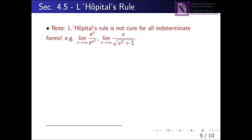بالمختصر، في بعض الأحيان لو استخدمنا L'Hôpital's rule ما بتطلعنا نتيجة. مثلاً هنا derivative of e^x دائماً e^x، وderivative of e^(x²) بتعطينا 2x·e^(x²)، فدائماً يطلع ∞/∞ حتى لو اشتقيت المرة الثانية والثالثة والعاشرة والمئة. في هذه الحالة لا نستخدم L'Hôpital's rule ونحاول نستخدم طرق أخرى. لما نلاحظ أن L'Hôpital's rule بعد أكثر من ثلاث أو أربع مرات يطلع نفس الناتج، معناته ما نقدر نكمل بها ونشوف طريقة أخرى للتبسيط.